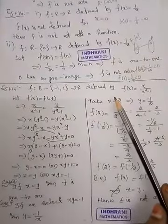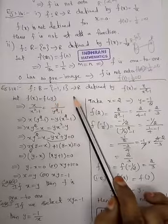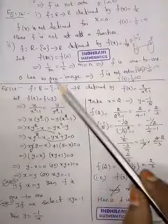They're asking whether it's 1 to 1 or not. So f(x) equal to f(y) implies x equal to y - if this holds, then it is 1 to 1.